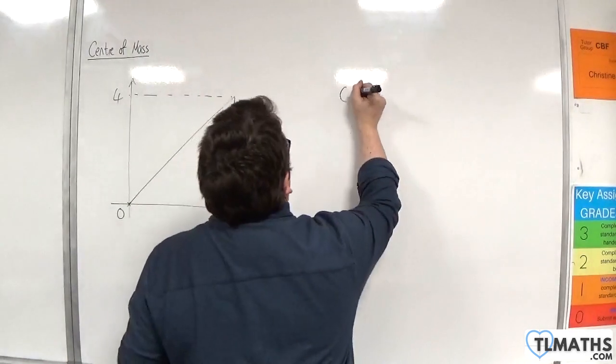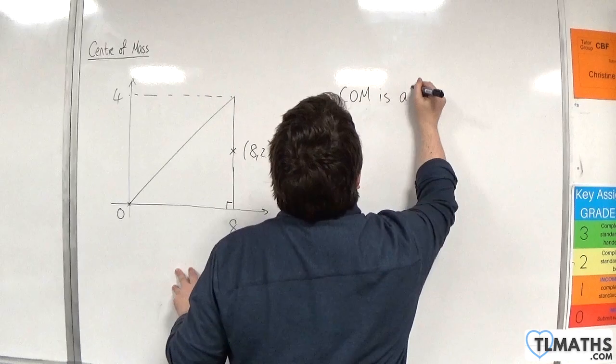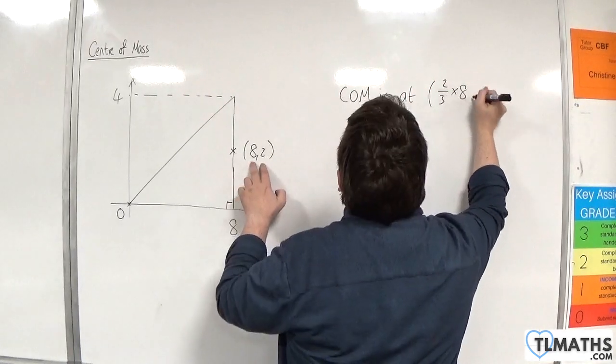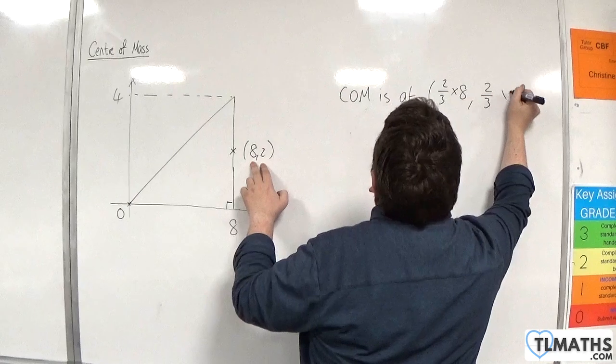So, the centre of mass is going to be at two-thirds times 8, two-thirds times 2.